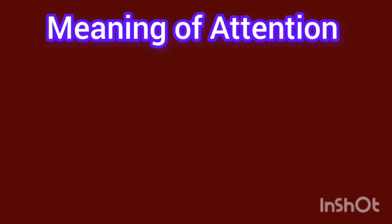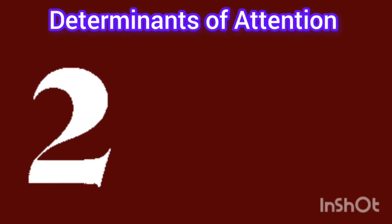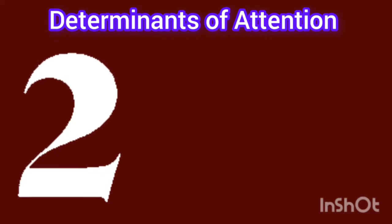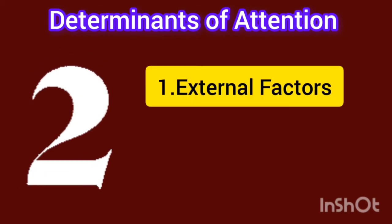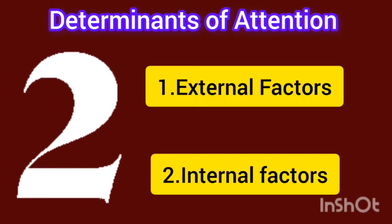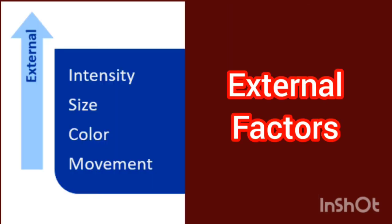Now let us see about the determinants of attention. The determinants of attention are divided into two: one is external factors and two is internal factors. Now let us see external factors. The external factors are features of stimuli such as size, intensity, and shape.